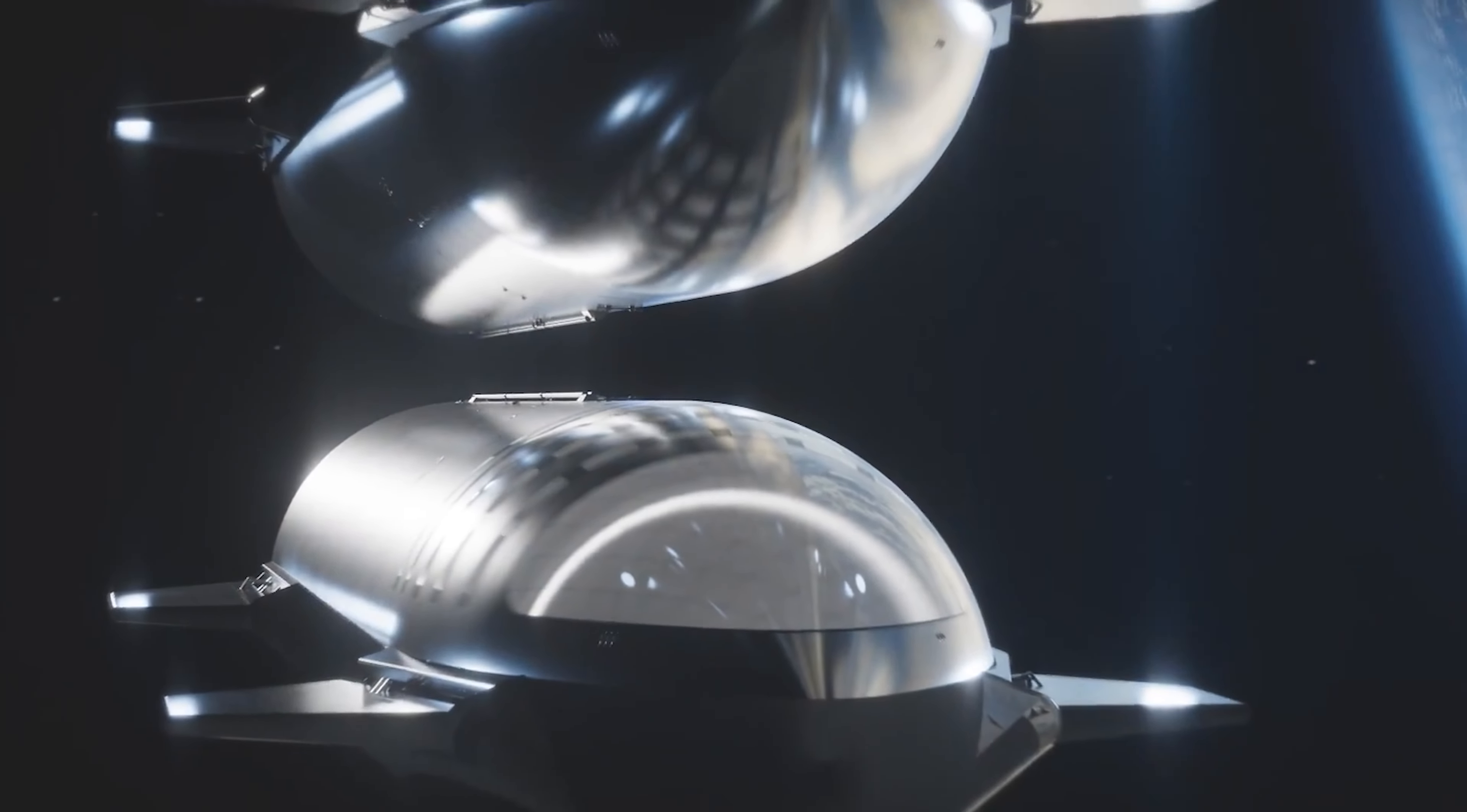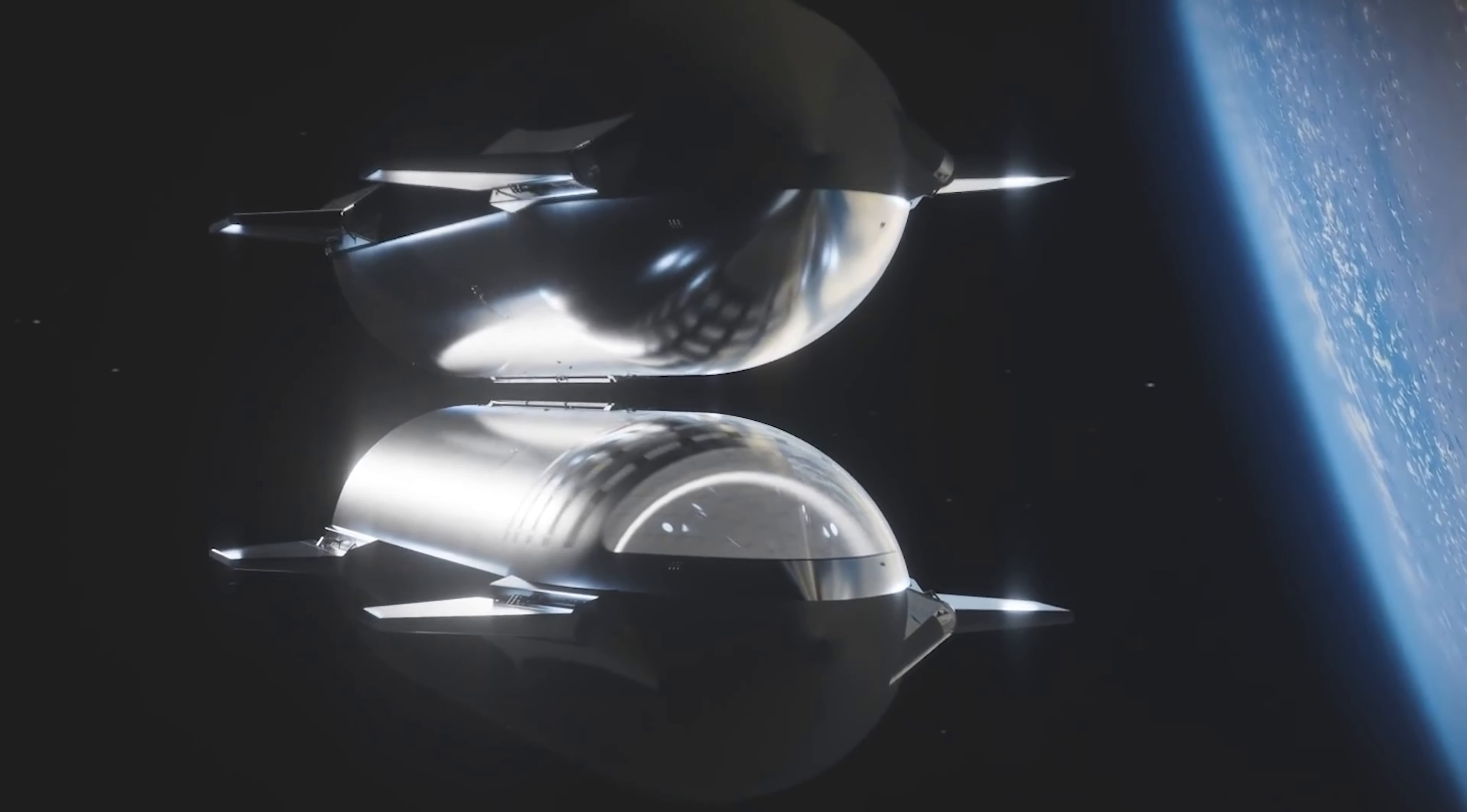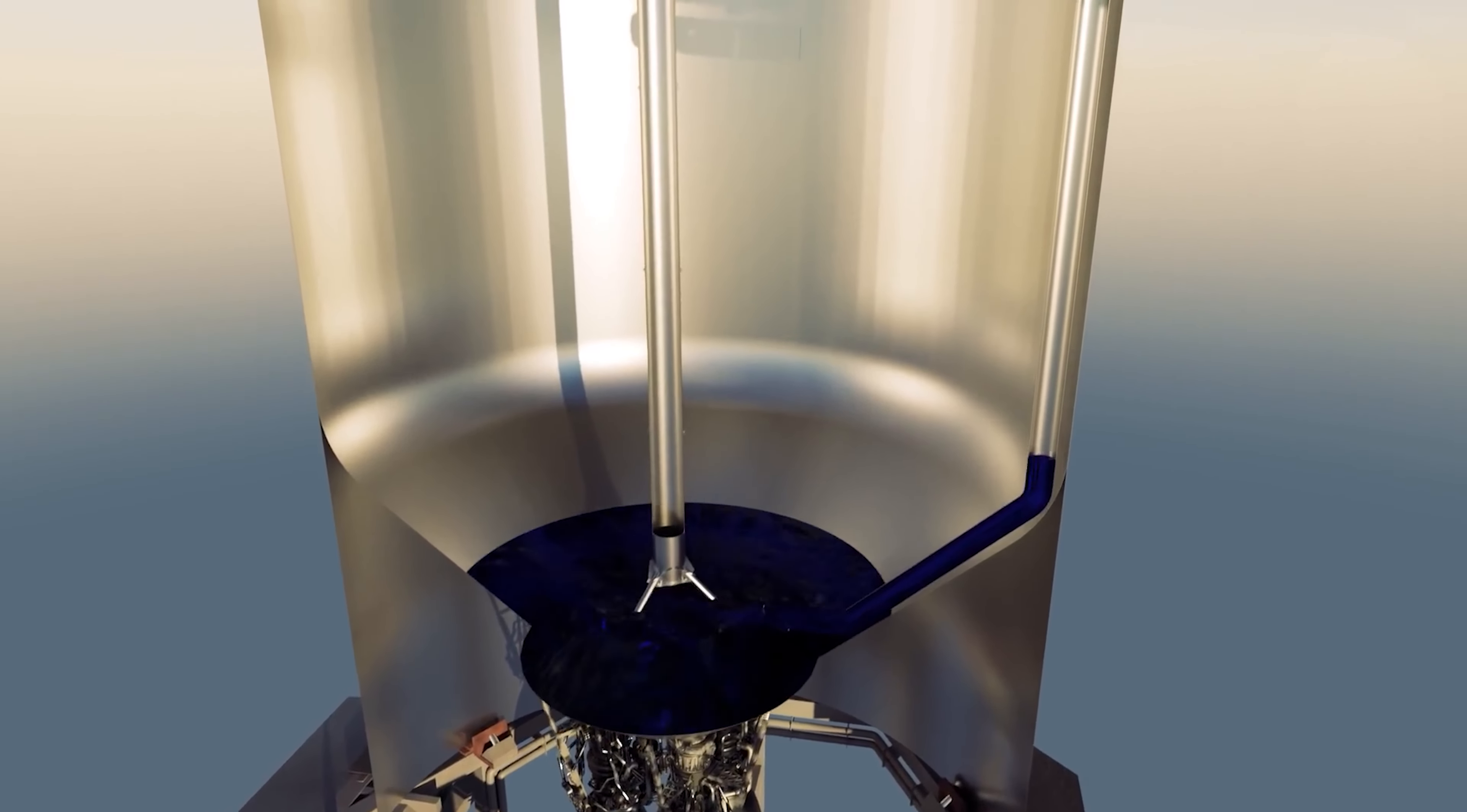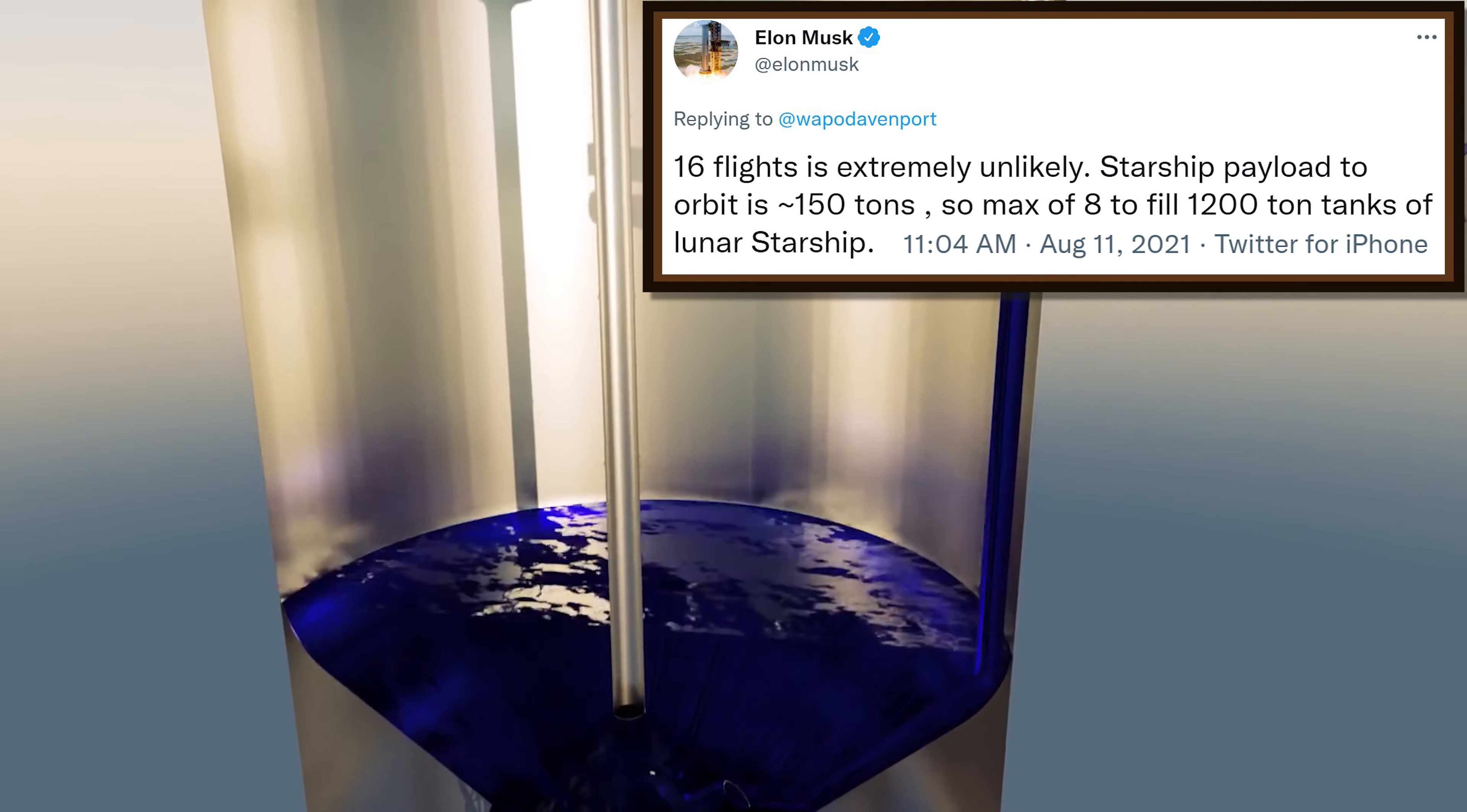But fully fueled, it would weigh too much for the Super Heavy Booster to lift to orbit. This means the tanks have to be filled in orbit by a second Starship, which is specifically designed to deliver propellant in space.